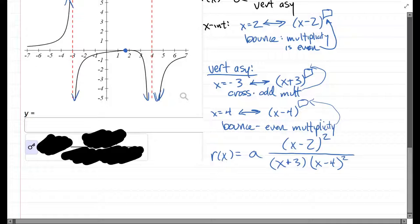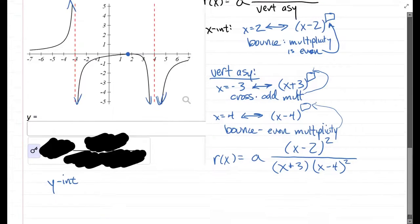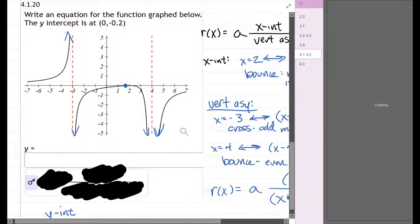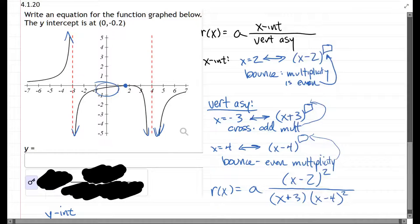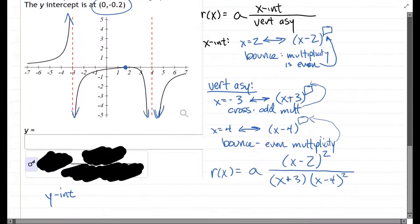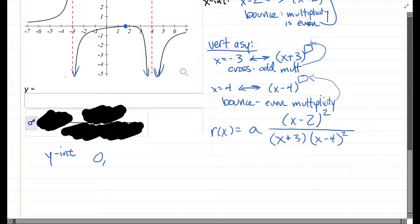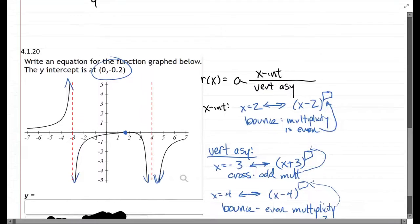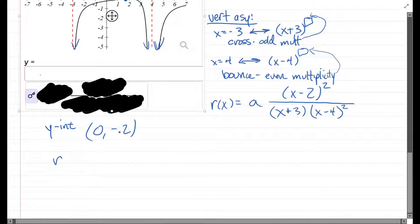Okay, let's look at the y-intercept. Now everything else we got from the graph. The y-intercept is hard to see on the graph, so this problem has it written right here: zero comma negative 0.2. Alright, so that means when we plug in zero to the r function, what we're going to get is negative 0.2.